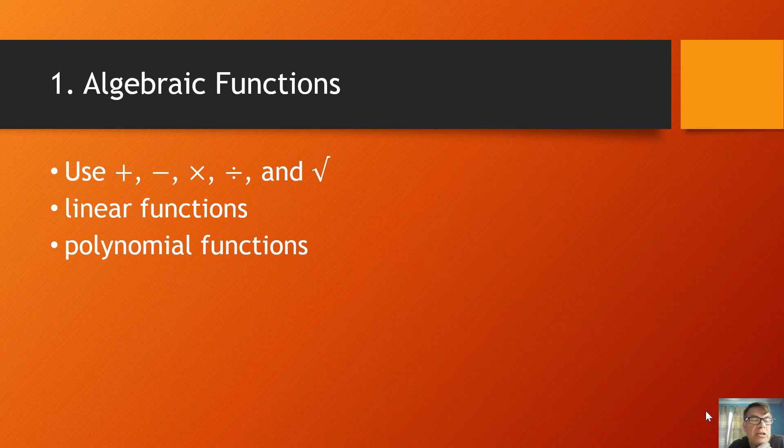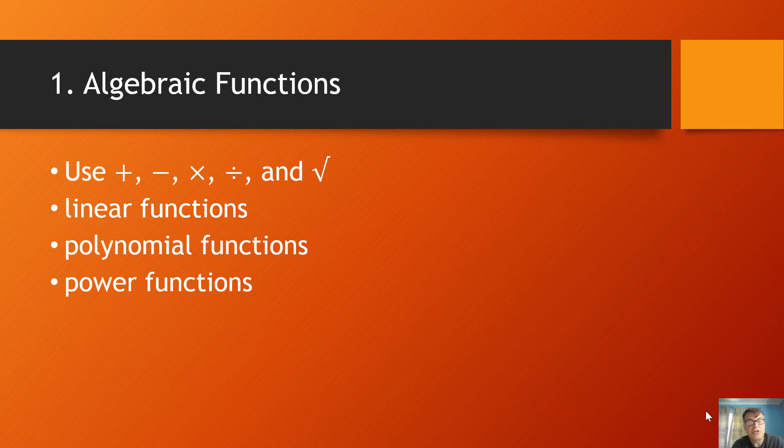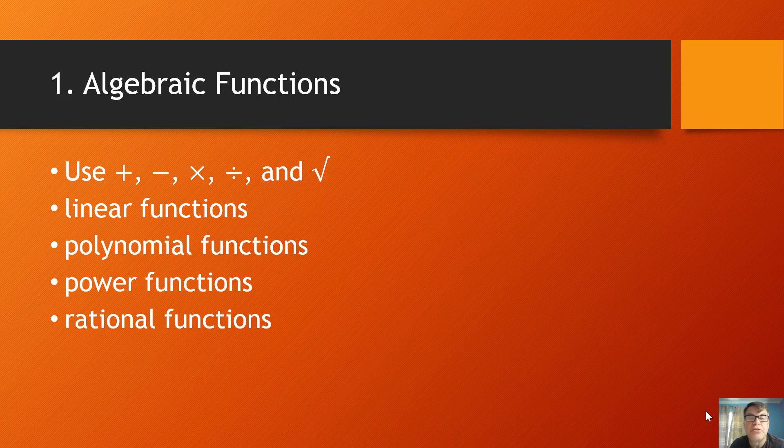Polynomials, I suppose you might say a linear function is a kind of polynomial where the leadoff power is 1. But polynomial functions, as the name suggests, poly means many. So polynomial functions tend to have more than one term and tend to have more than one power. Power functions, I suppose you could say some of them could be small polynomials where basically you just have one power instead of multiple powers. But there's some others that don't fit the polynomial formula so well. And then rational functions are where a function is divided by a function.